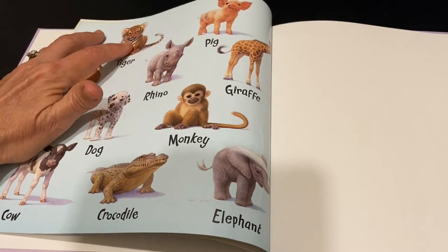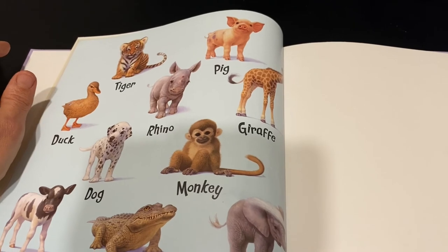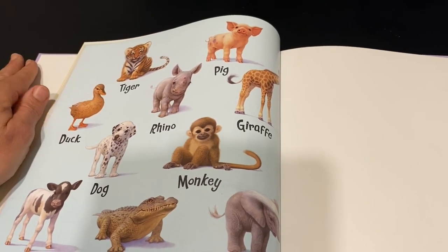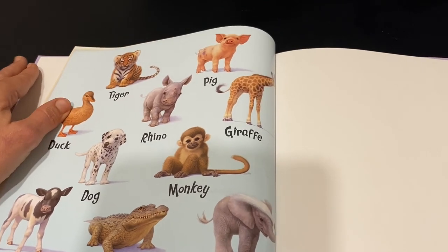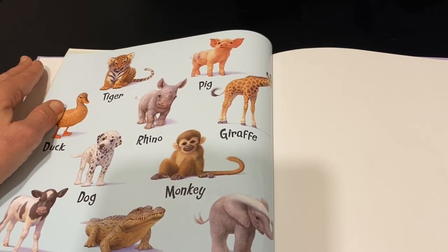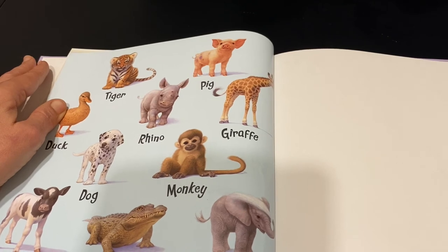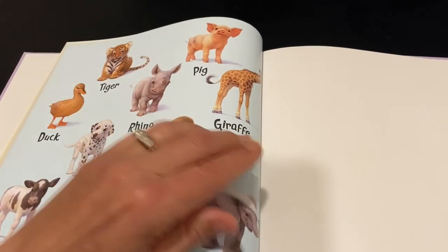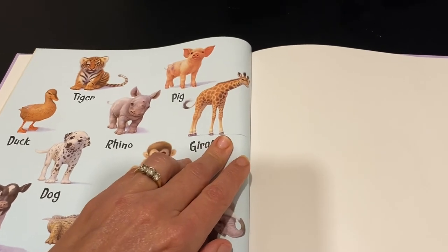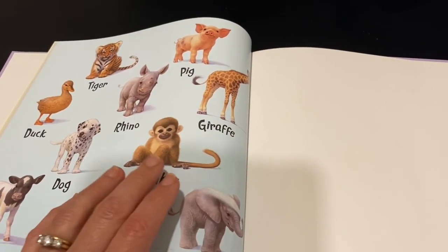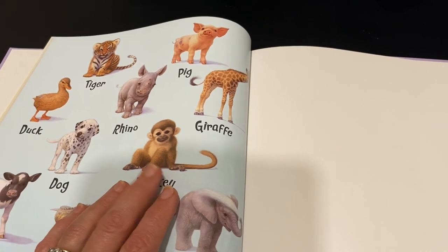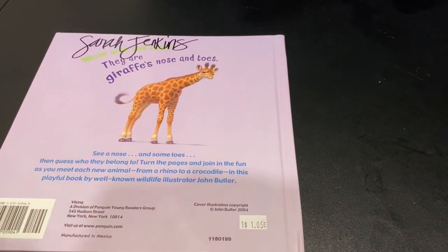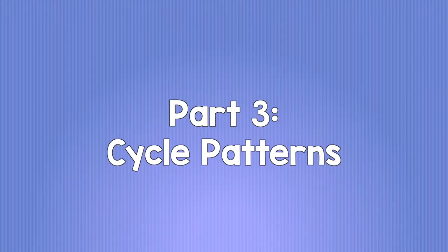I see symmetry in tiger's stripes — they are the same on both sides. I also see that he has the same eyes, they look the same on both sides, that shows symmetry. Do you see patterns in giraffe's skin? Do you see symmetry in monkey's face? I do too.